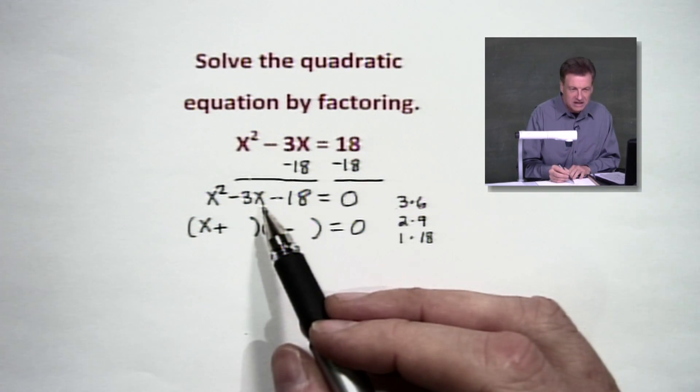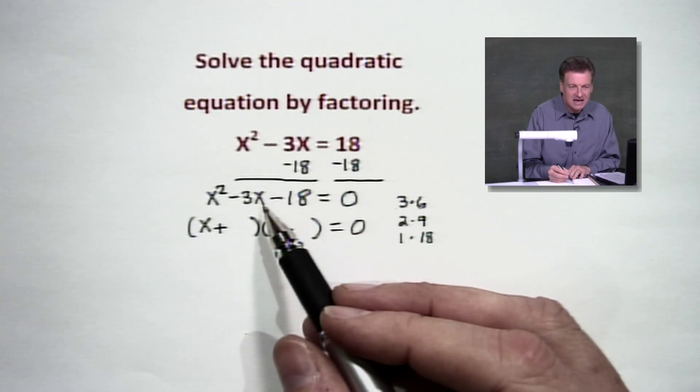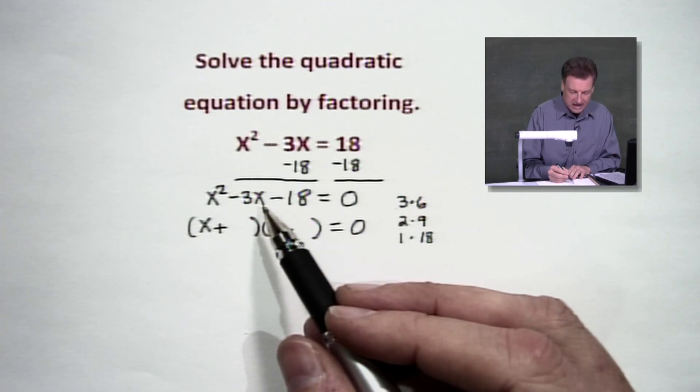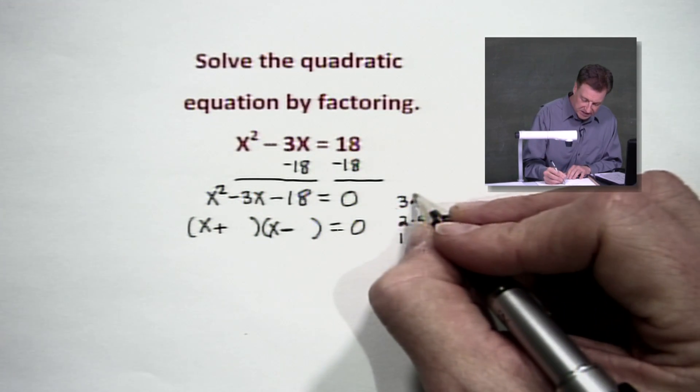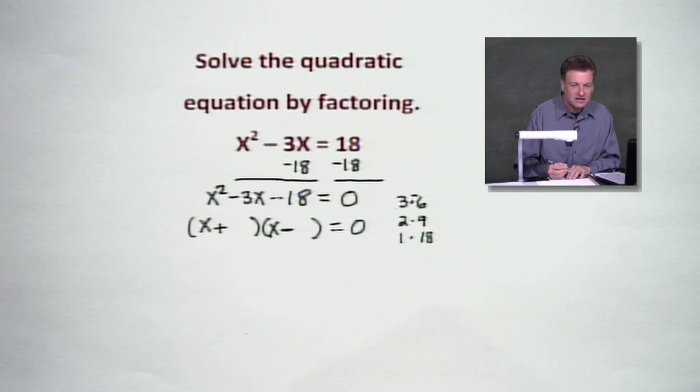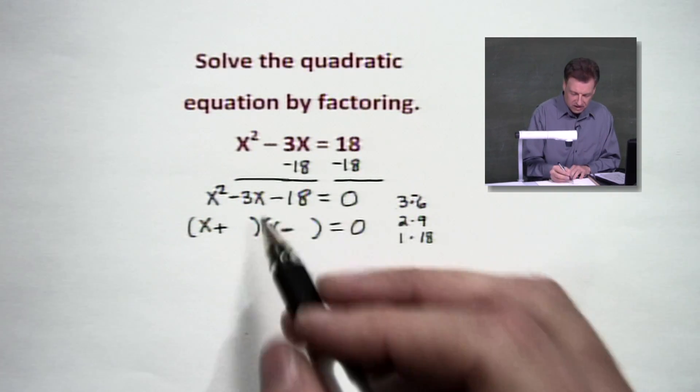What I need is two that will add up to give me a negative 3. Now, remember, these signs, one of them is positive, one is negative. So if I put a negative on that 6 and add those together, I've got negative 3 for the middle, negative 3x. That's good news.